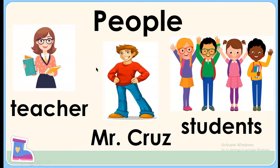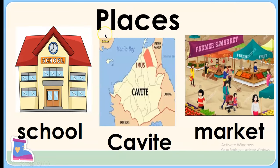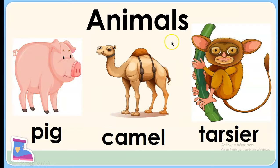Now, these are some examples. For people, we have teacher, Mr. Cruz, students. For things, we have bag, aqua flask, book. For places, we have school, Cavite, market. For animals, we have pig, camel, tarsier.